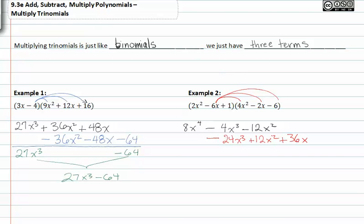And lastly, 1 times 4x² will give us positive 4x², minus 2x, and minus 6.